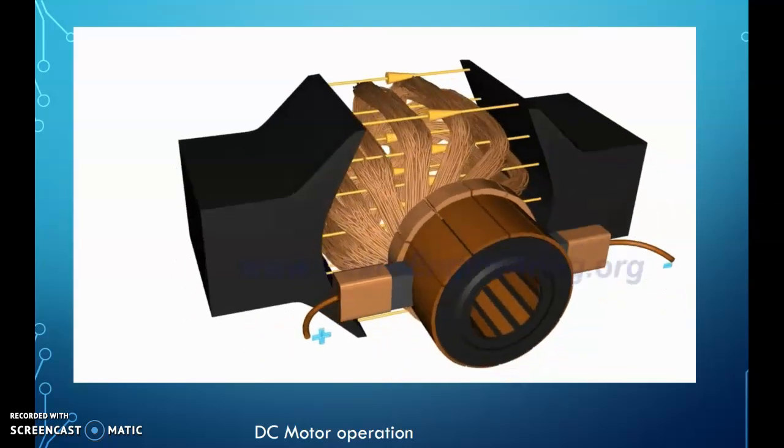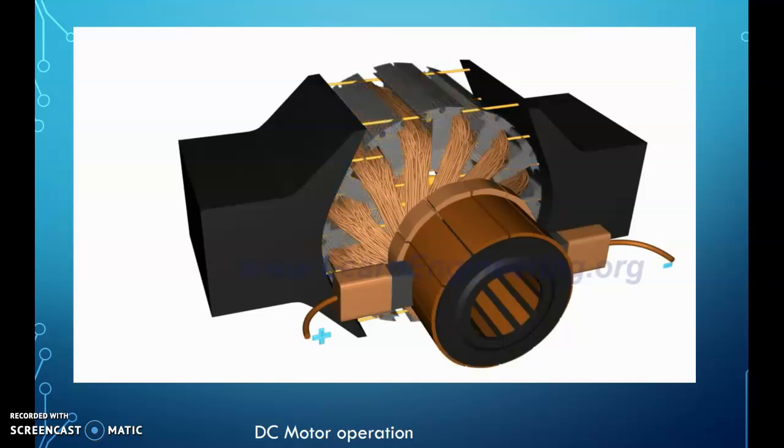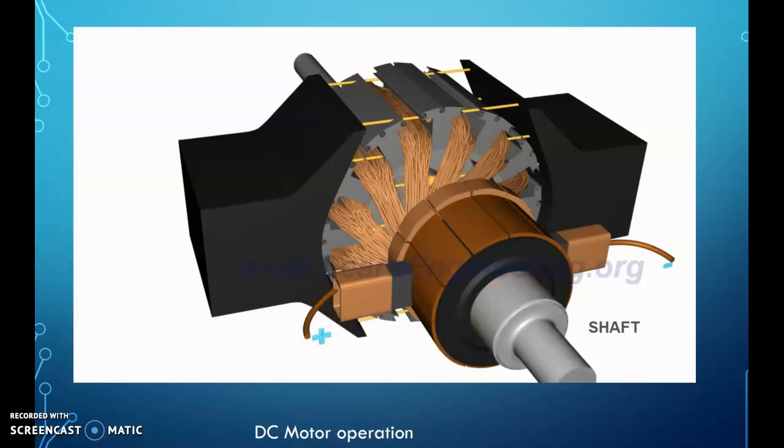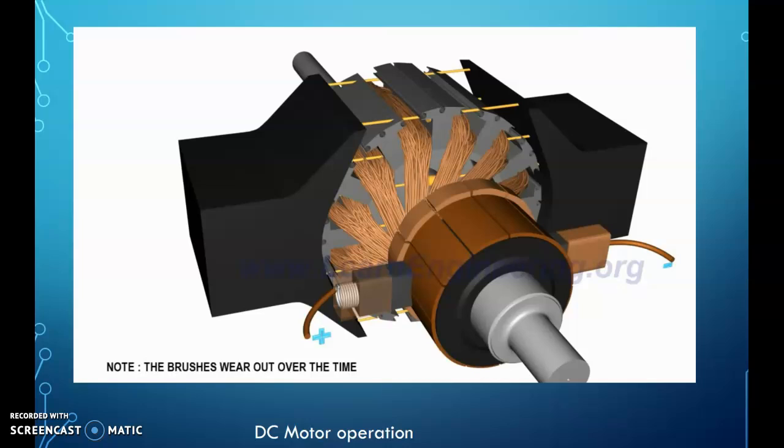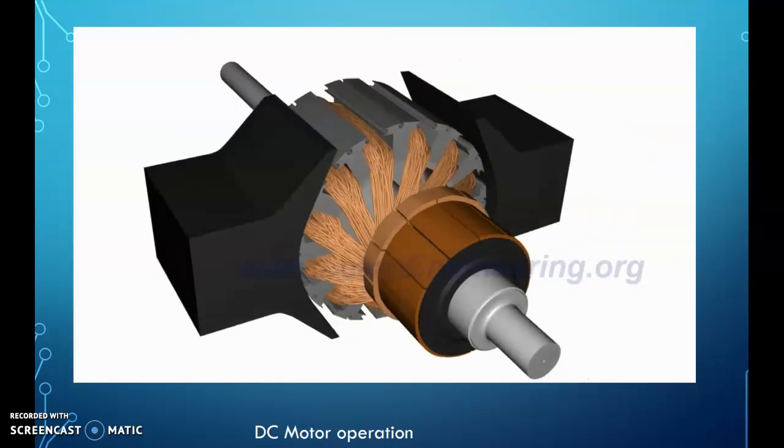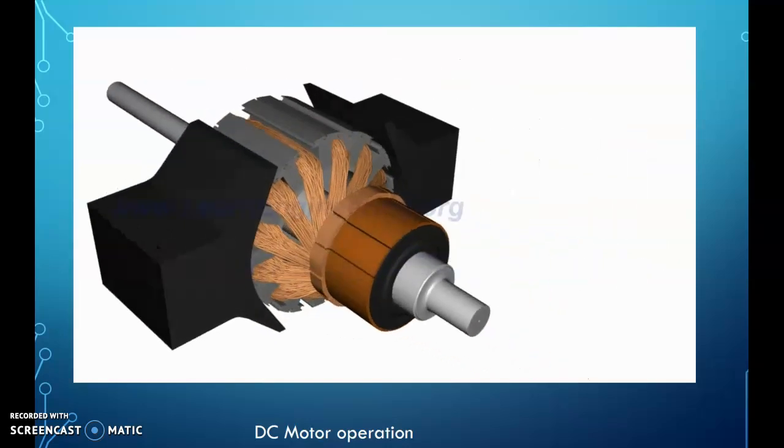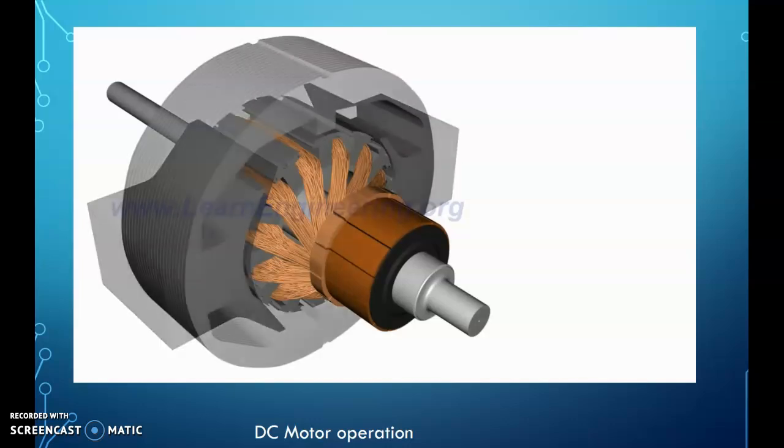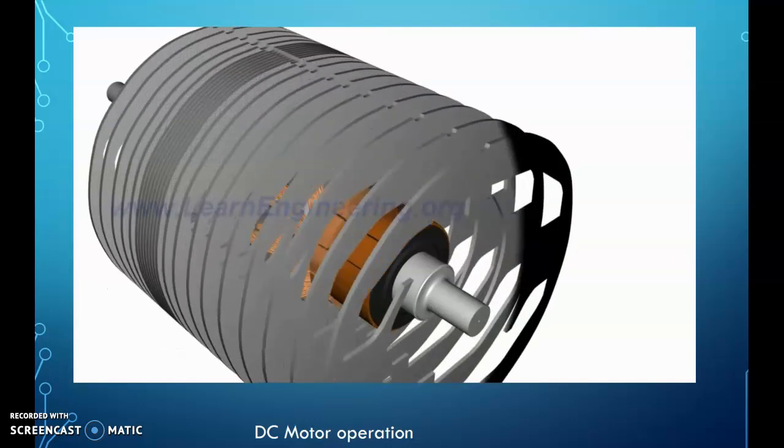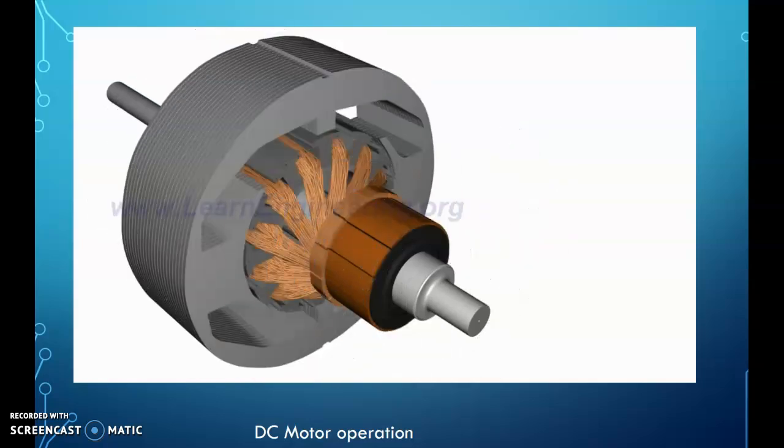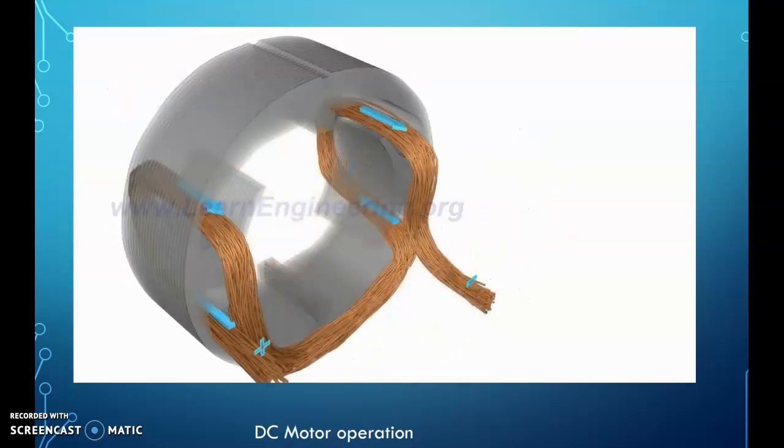In a practical motor, the armature loops are fitted inside slots of highly permeable steel layers. This will enhance magnetic flux interaction. Spring-loaded commutator brushes help to maintain contact with the power source. A permanent magnet stator pole is used only for very small DC motors. Most often, an electromagnet is used. The field coil of the electromagnet is powered from the same DC source.